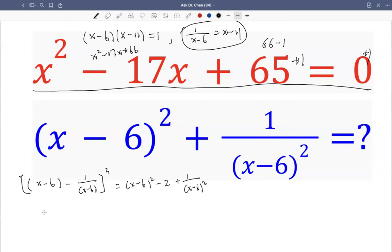So that equals this. If we rewrite this, just plus 2 on both sides. So that equals to this, because this expression plus 2. But what is this expression? That's x minus 6 minus 1 over x minus 6, which can be written as x minus 6 minus x minus 11.